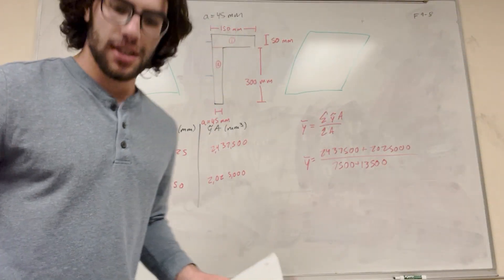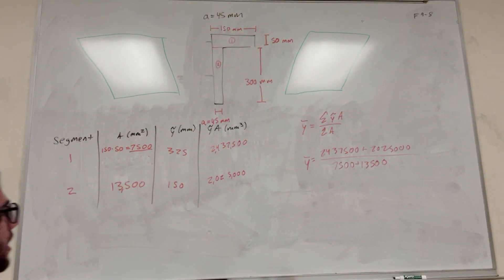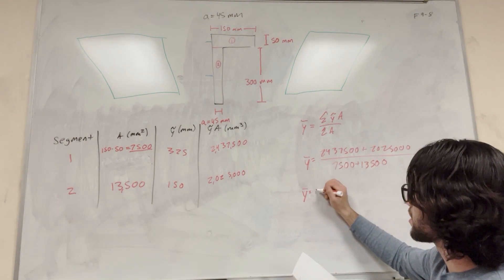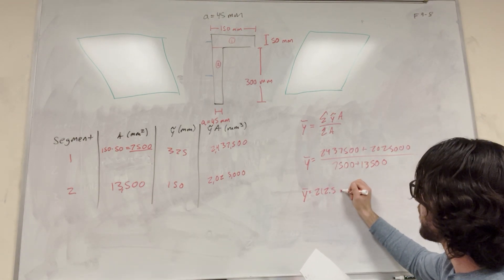And the math is that simple. So literally now you just plug it into your calculator and you find y bar. And if you plug that in, of course, your y bar is 212.5 millimeters.